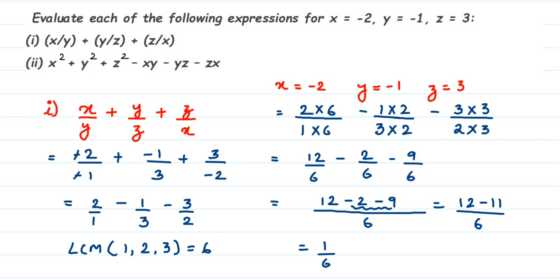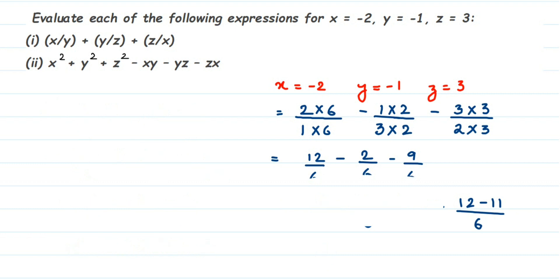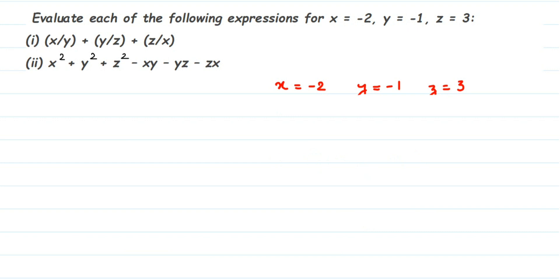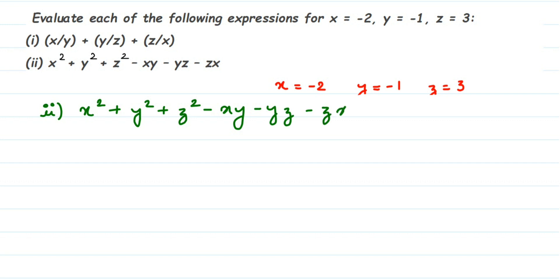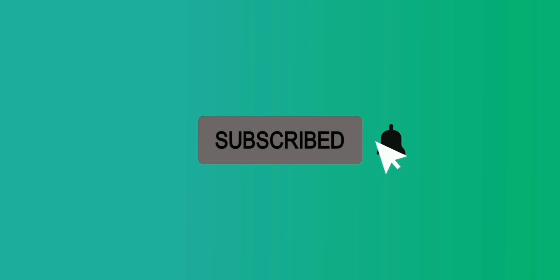The second expression is x² + y² + z² - xy - yz - zx. Substituting: x² is (-2)², y² is (-1)², z² is 3², then minus x·y which is (-2)·(-1), and so on. Let's substitute all values the same way we did in the first question.